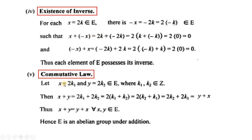Now we check the commutative law. Let us take two even integers x = 2k₁ and y = 2k₂, where k₁, k₂ are integers. Now x + y, putting the values, we have 2k₁ + 2k₂. Simplifying, in the bracket we have two integers k₁, k₂; using commutative law on integers we get k₂ + k₁. Multiplying by 2 we get 2k₂ + 2k₁, which is y + x. Hence x + y = y + x for all x, y belonging to E. This is the commutative property of addition.